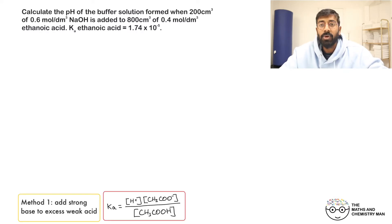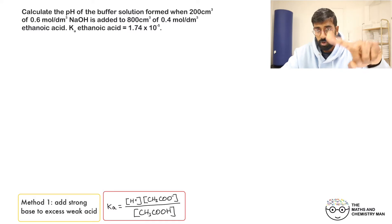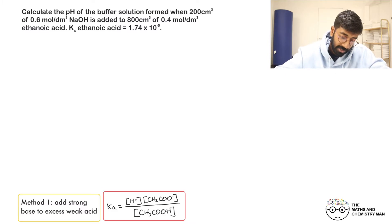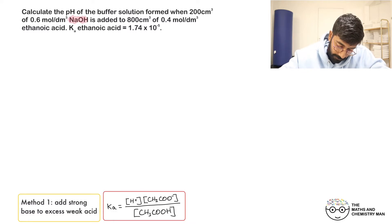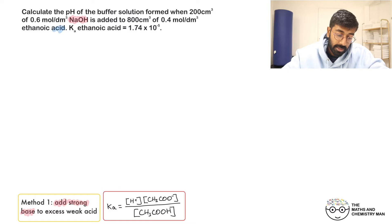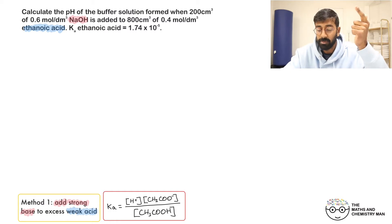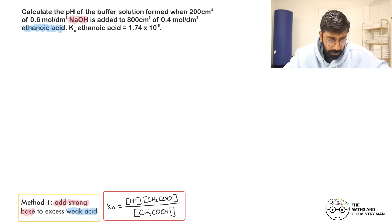This is method number one of two ways of making buffer solutions — adding a strong base to an excess of weak acid. The giveaway in the question is NaOH, which is obviously a strong base, and you're adding it to ethanoic acid, which is your weak acid. If you see that combination, it's a trigger that you need to use method number one.